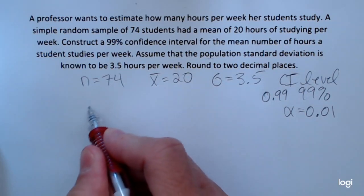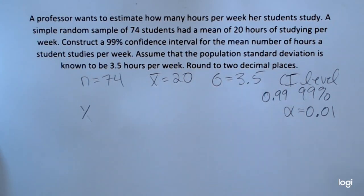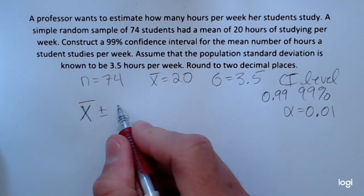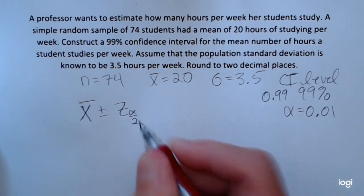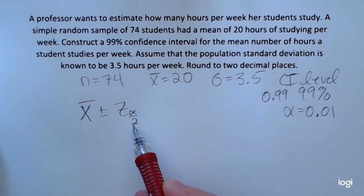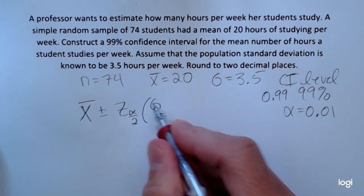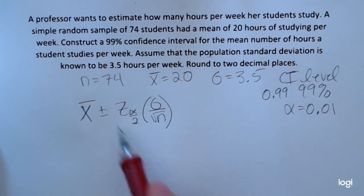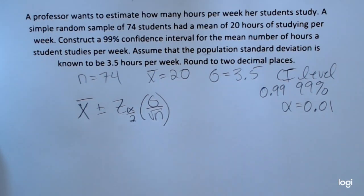So the formula for the confidence interval for the mean when sigma is known is x bar plus or minus this critical value, z sub alpha over 2, times the population standard deviation divided by the square root of n. So the only piece I don't have given to me is this z sub alpha over 2.